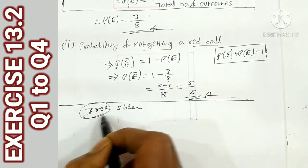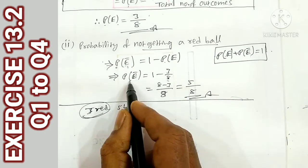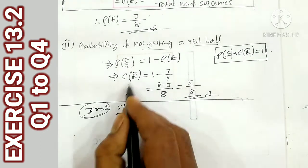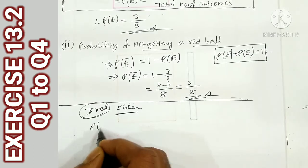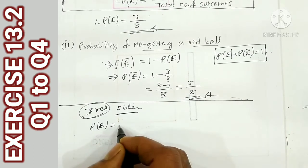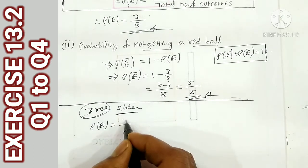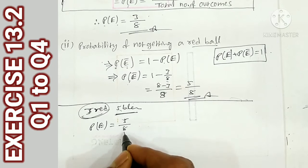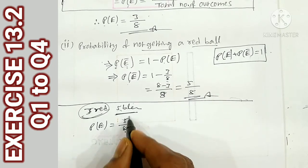Second method: if you pick a black ball, the number of favorable events is 5, and total number of outcomes is 8. So P(black) = 5/8.